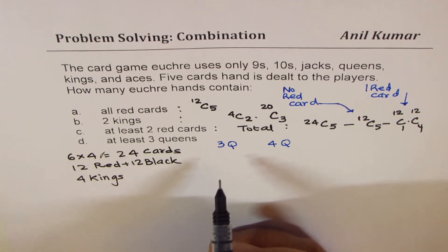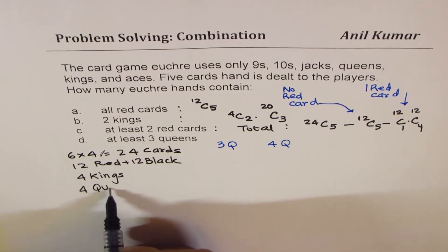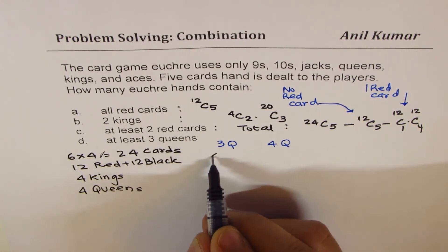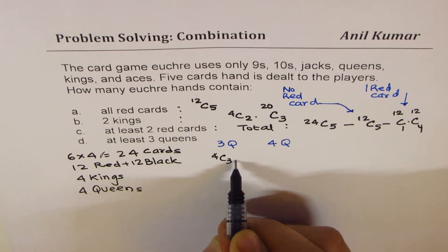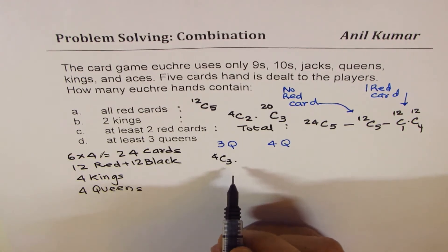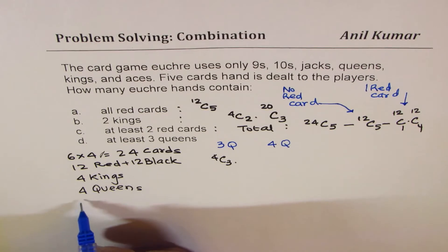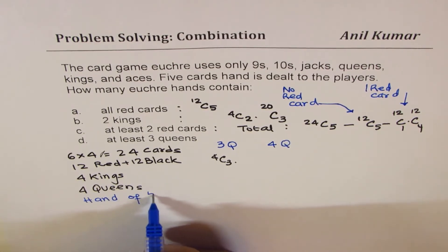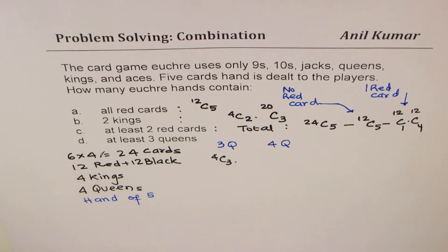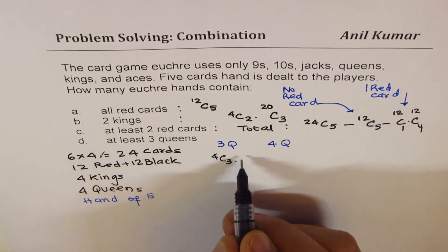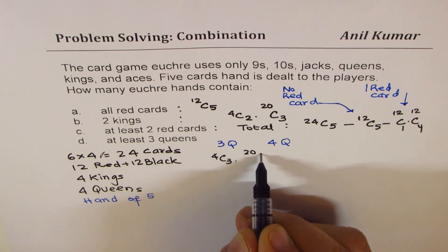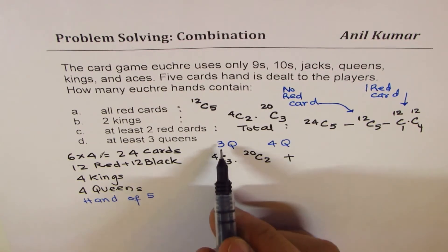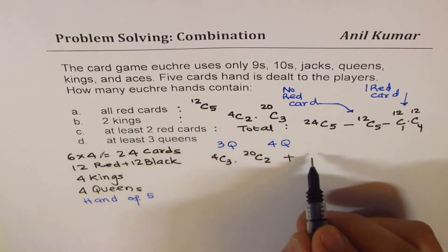So let's do this. Three queens means we have four queens in all. So out of four, you get three. That means 4C3. There are two other cards to be dealt since we are talking about a hand of five. So always the combination is with five. So two of these queens and out of the rest 20, we take other two cards.